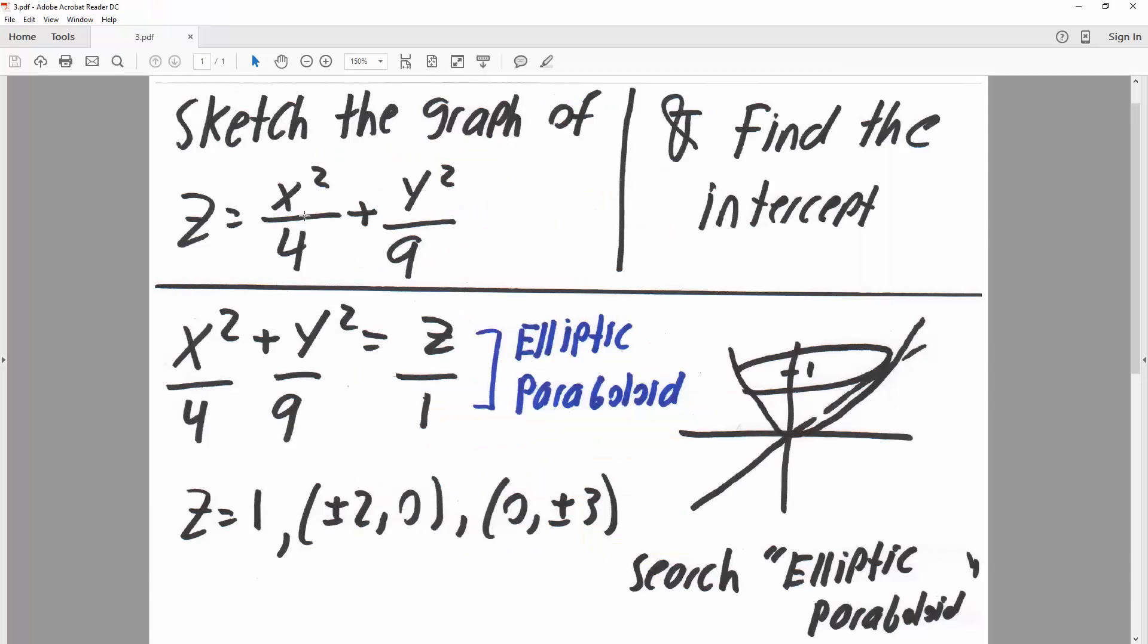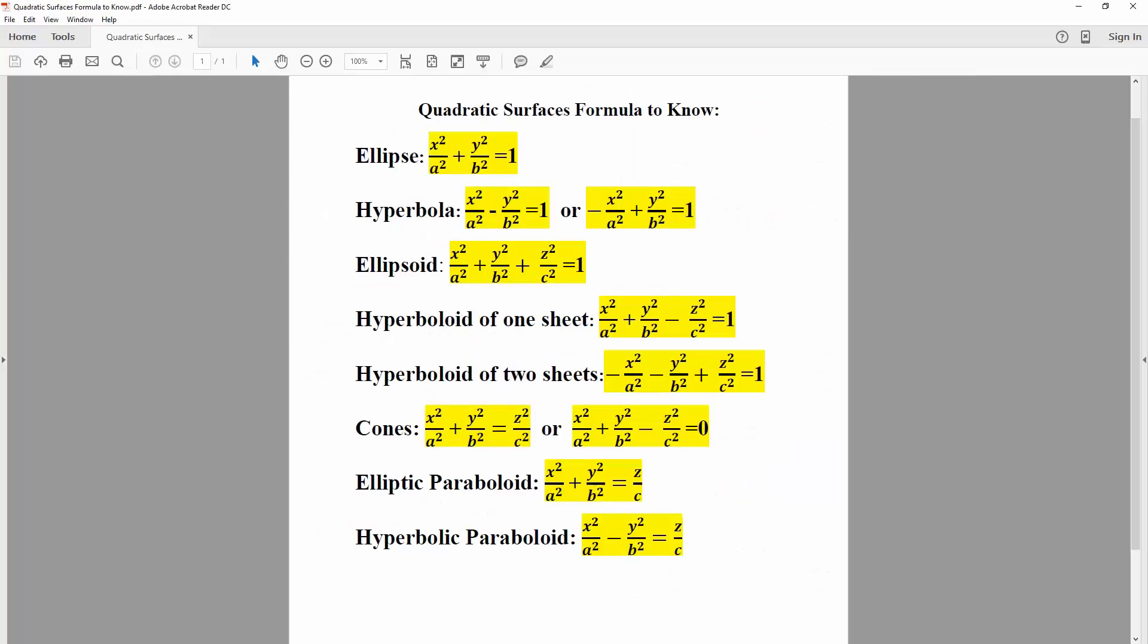So we have z equals x squared divided by 4 plus y squared divided by 9. One thing we see automatically is that it's not z squared. So since we know it's not z squared, all of these won't be it; it will either be this or this. And so the only one that would match would be the elliptic paraboloid.